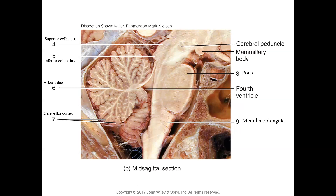If you take a mid-sagittal section through the cerebellum, you can see it also has gray matter on the outside and white matter on the inside. The white matter looks almost like a tree, so it is called the arbor vitae — 'arbor' meaning tree. The white matter consists of nerve axons, while the gray matter contains nerve cell bodies. The cerebellum is connected to the brain stem through the superior, middle, and inferior cerebellar peduncles.